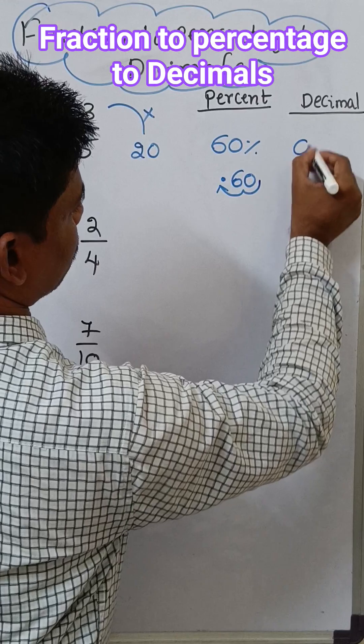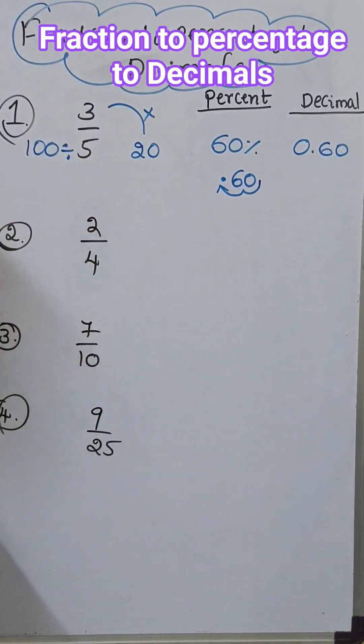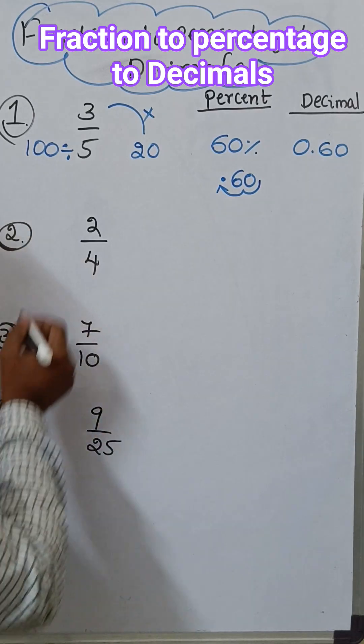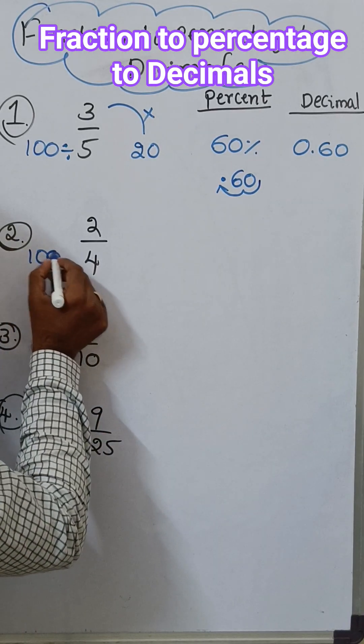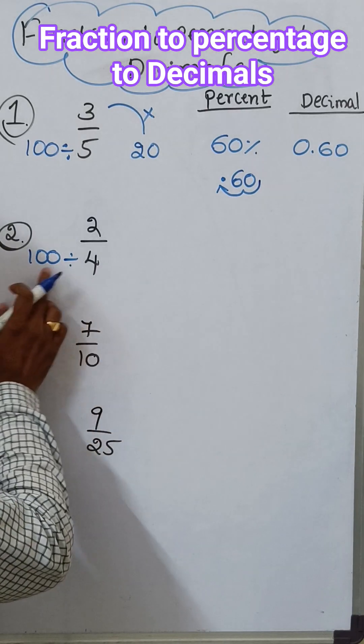That we have to take the 0.6, 0.6. Similarly this one, take 100 divided by 4. Take the denominator 100 divided by 4, that's 25.